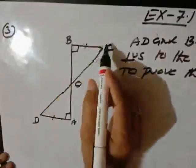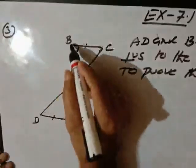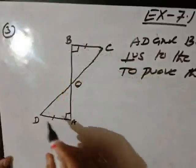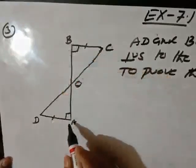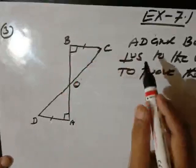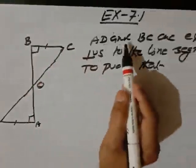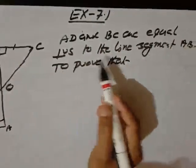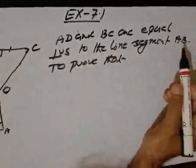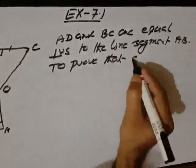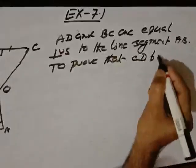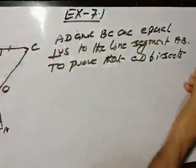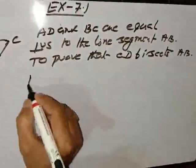AD and BC are two equal perpendiculars of the line segment AB. To prove that CD bisects AB. So first of all, you write the statement AD and BC are two equal perpendiculars to the line segment AB. Prove that CD bisects AB. Proof start.